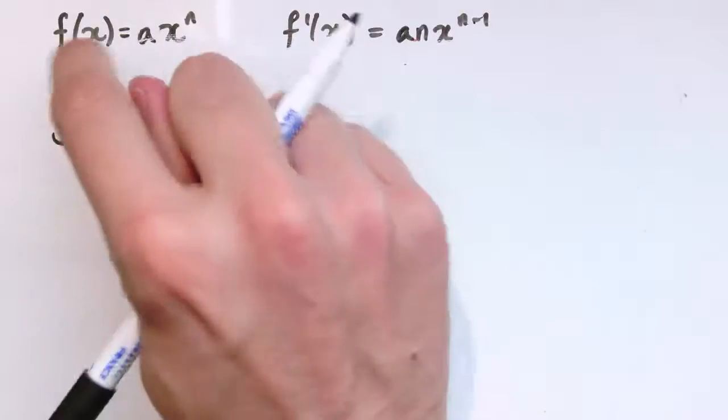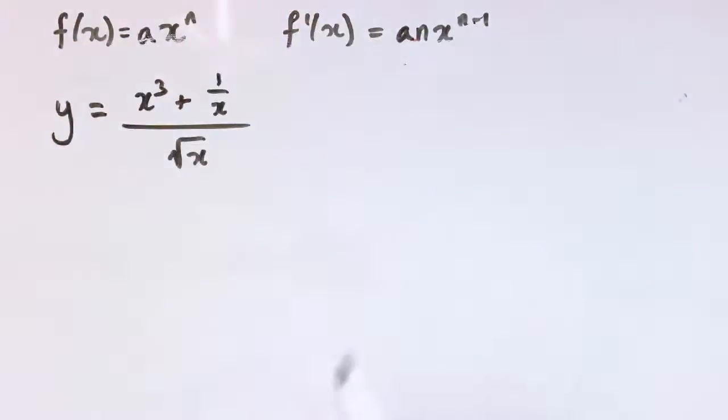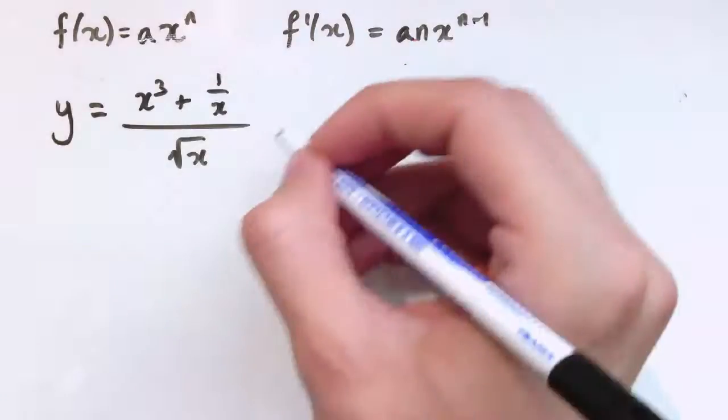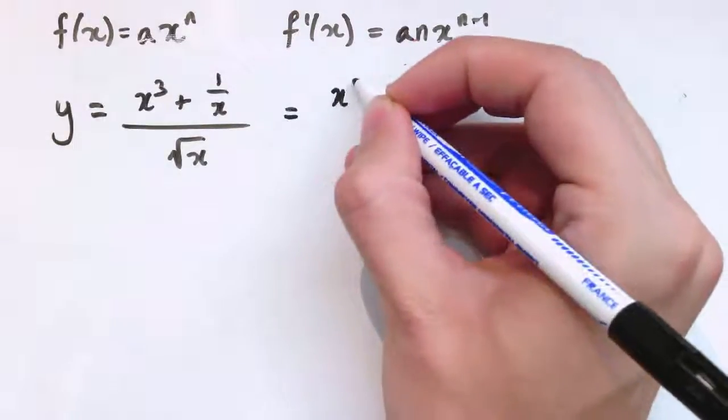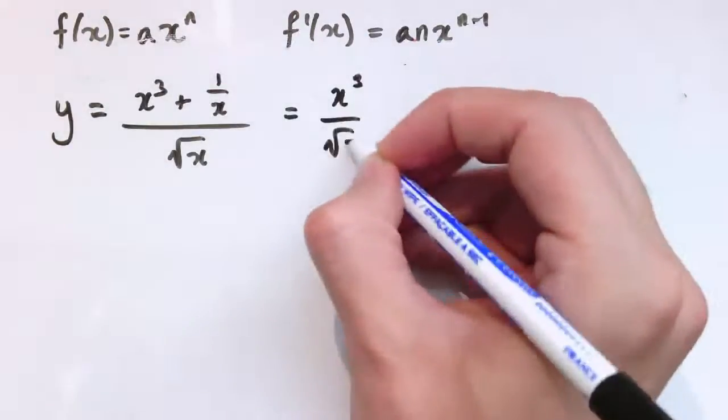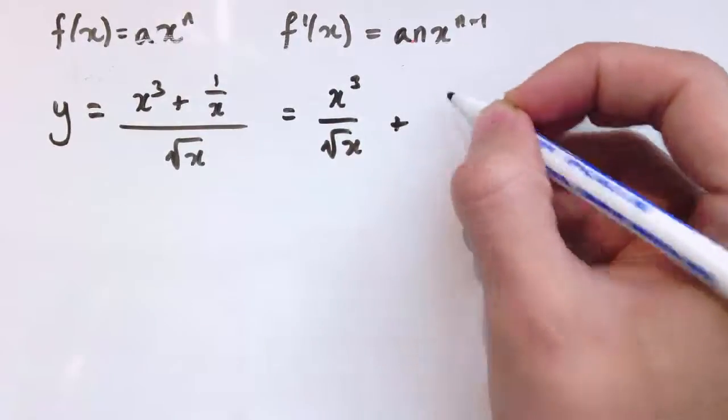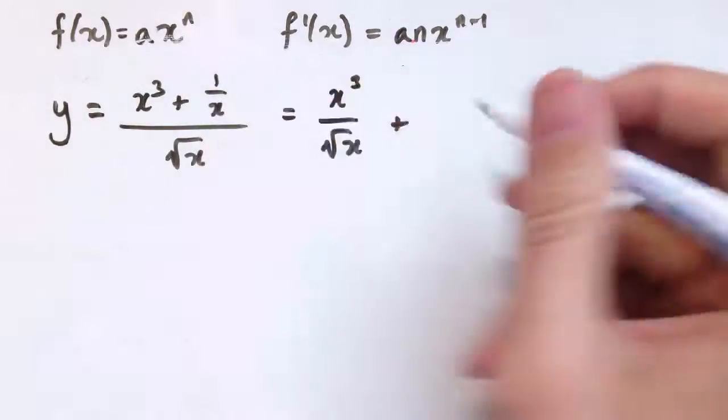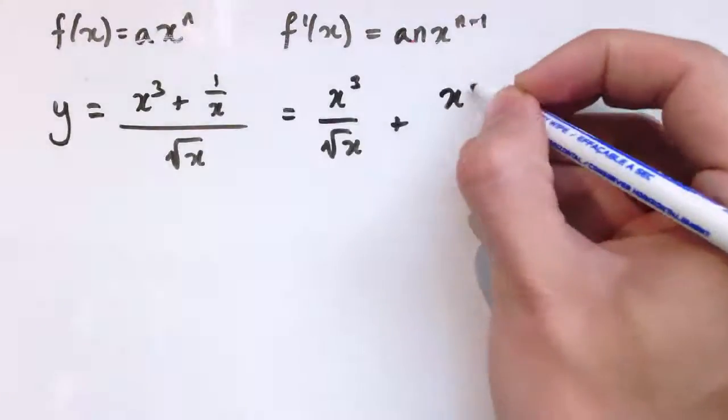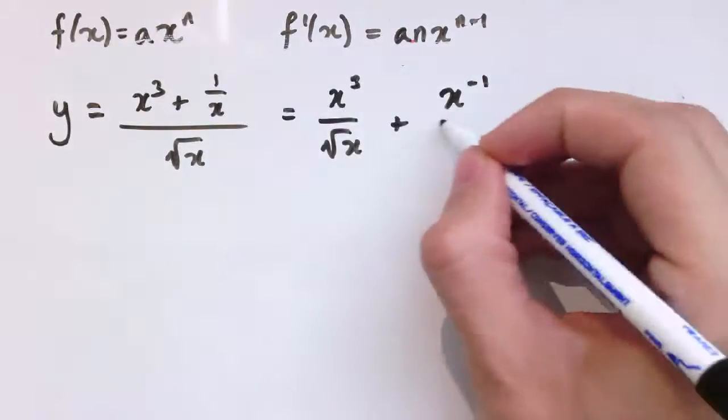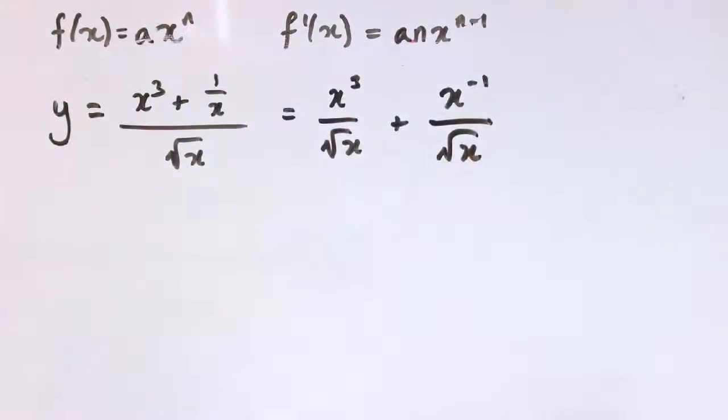Now, the function here, again, it's a bit like the second example we did. We've got different two fractions. We've got a fraction here, but I can split it into two. So I could say it's x cubed over root x. And then I've also got here, now, I don't like these fractions inside fractions. I'm just going to write 1 over x as x to the minus 1 divided by the square root of x.